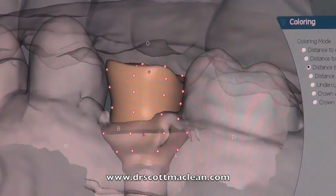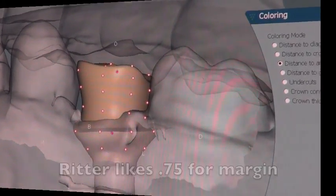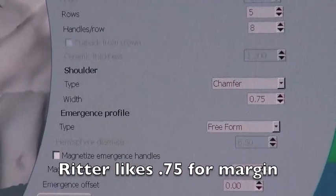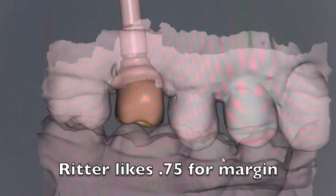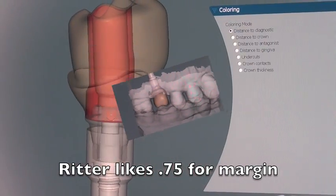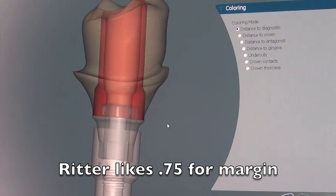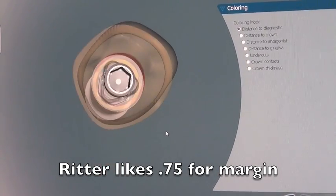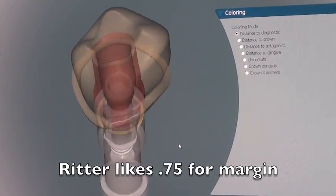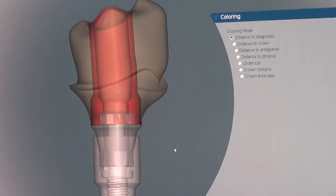It's a really great system to use. Mike Ritter, who's doing this case, likes to have 0.75 on his margins for the porcelain in the molar so he can have enough design. Here you can see the minimum channel in red, which is the zirconia—you have to have that much zirconia minimum, and all the rest is just extra, which is great.